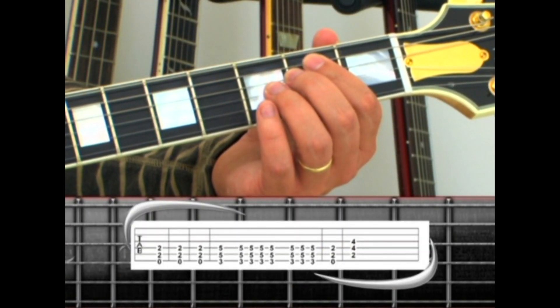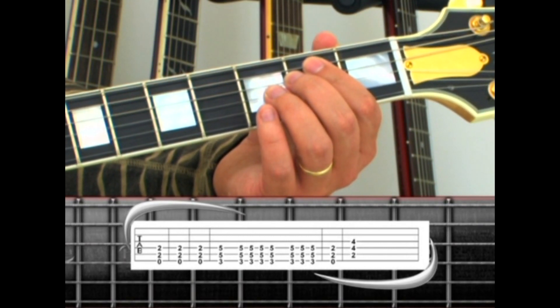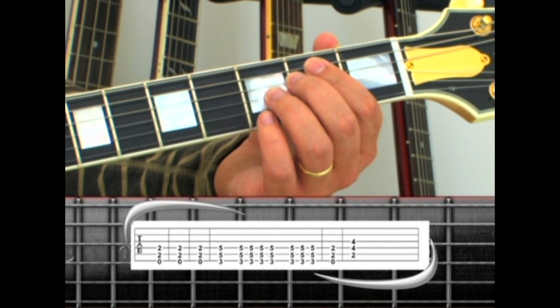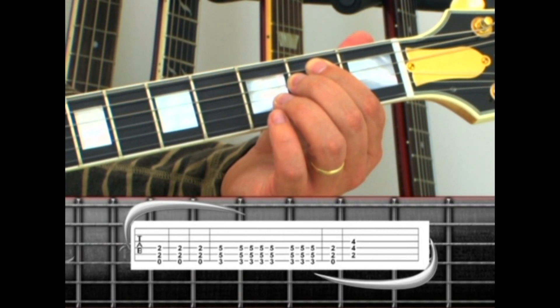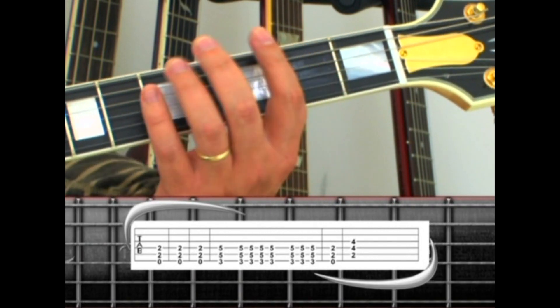After the chorus, there is an instrumental section that comes in for phrase 5. The rhythm repeats E5 for three measures, and after the third measure, there is a G5 with a percussive strumming pattern.